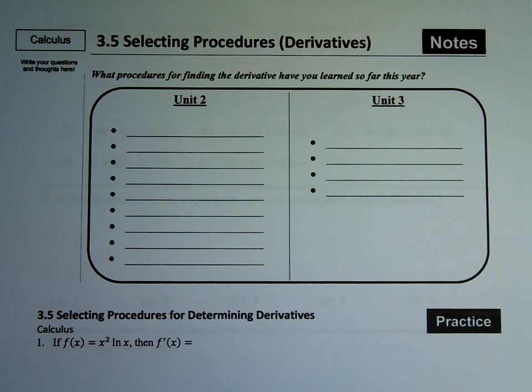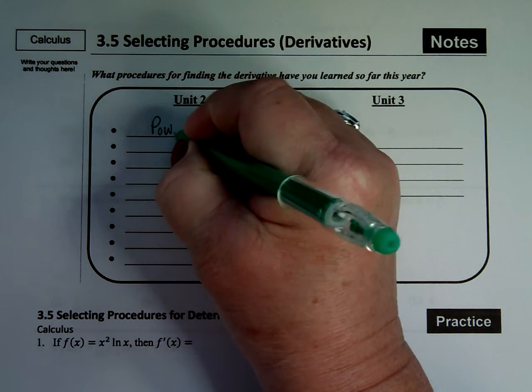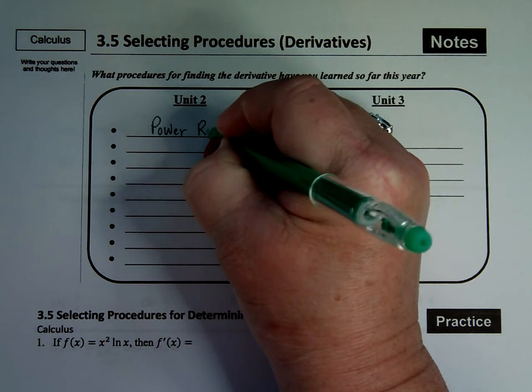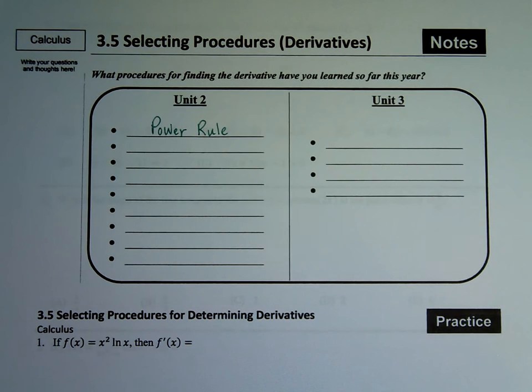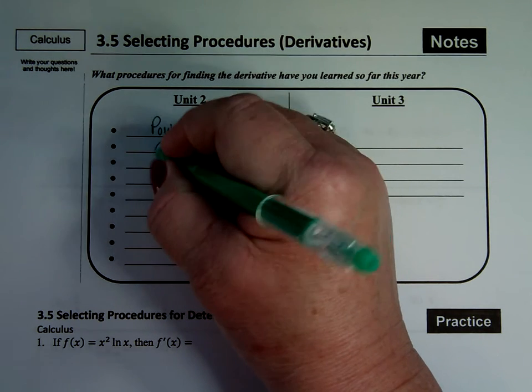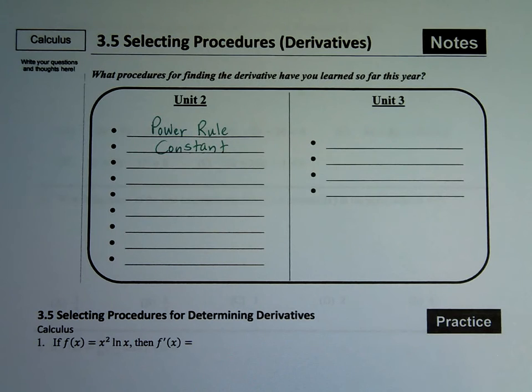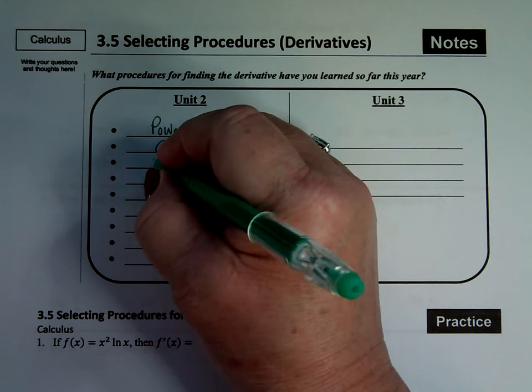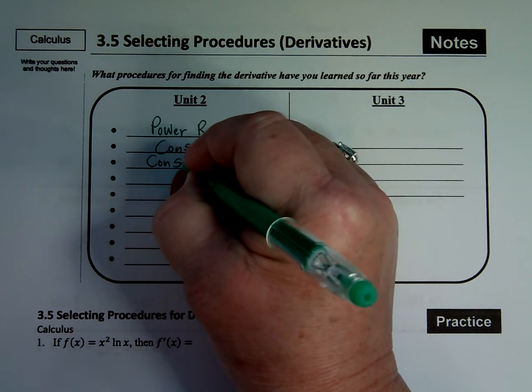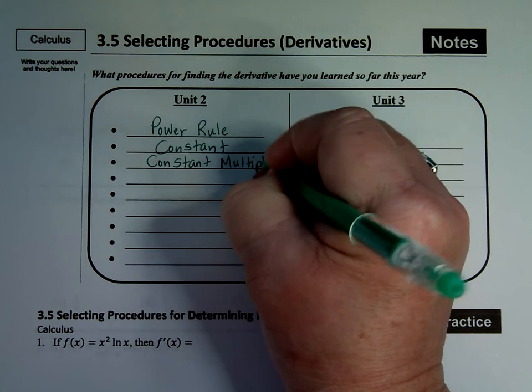Just to remind us of the rules we've learned so far, in unit 2, the first thing we learned is the lovely power rule, which allowed you not have to take limits and f of x plus h and all that stuff. There's a rule for the derivative of constants. We know that the derivative of a constant is 0.